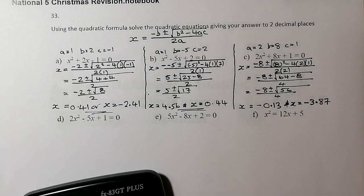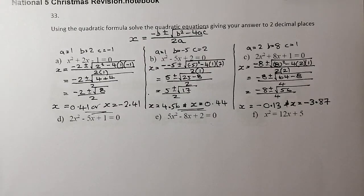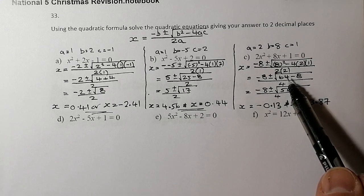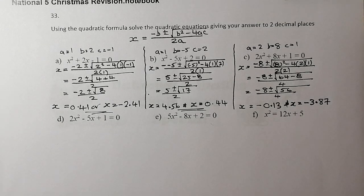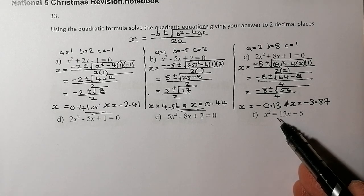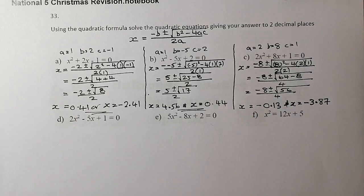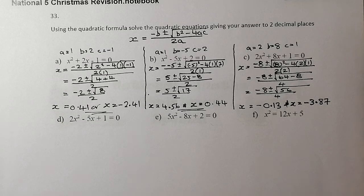That's three questions done with the quadratic formula. Remember: if you get a negative number inside the square root, there is no solution and you must state that. For question F, you'll need to rearrange the equation to equal 0 first, then solve. Make sure you give answers rounded to the decimal places asked — you don't want to lose marks in the exam. Good luck with all your revision for your January and February assessments.